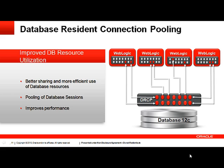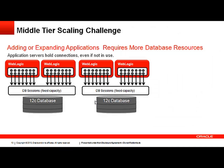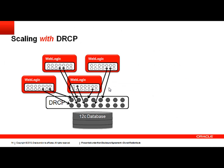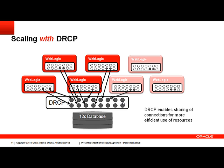Database Resident Connection Pooling. This feature improves database resource utilization — database sessions are pooled at the database. It improves performance by pooling database sessions for a large number of WebLogic Server connections. This feature is most applicable when database sessions are not always used. The middle tier scaling challenge: application servers hold connections even when they are not in use, resulting in a fixed capacity of connections or sessions. If there is increased demand on the mid-tier, this might require an increase of database resources. With DRCP, sessions are pooled at the database level, allowing a more efficient use of these resources.